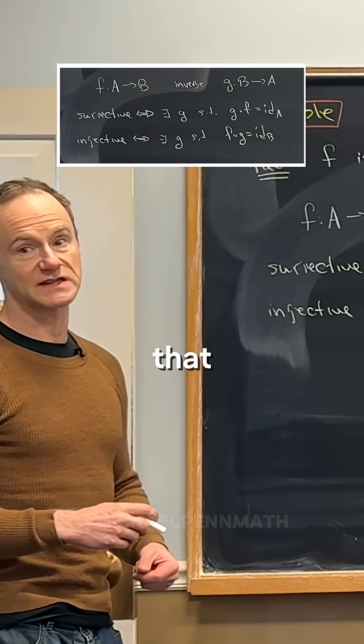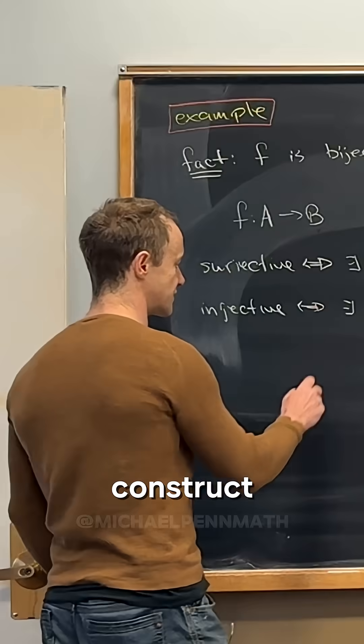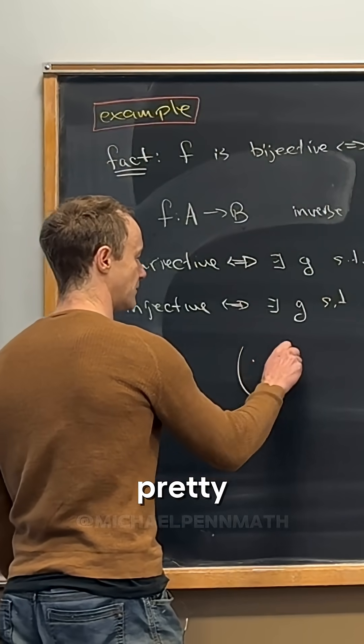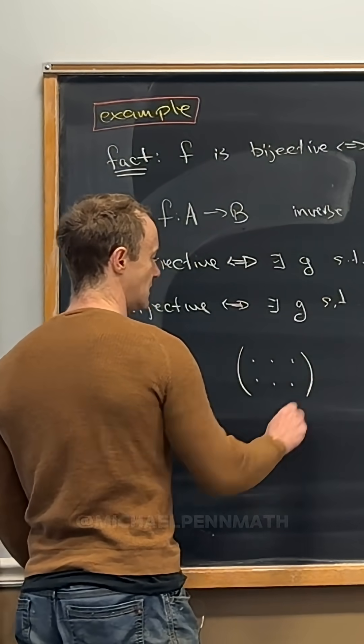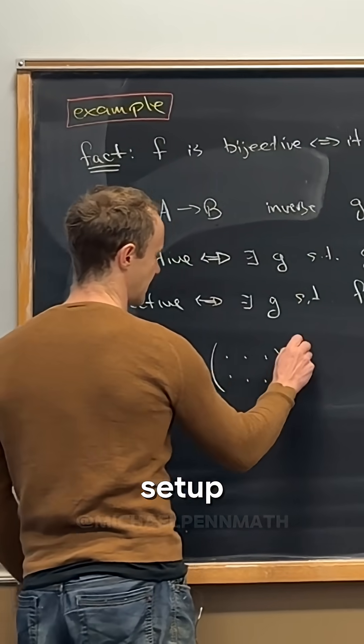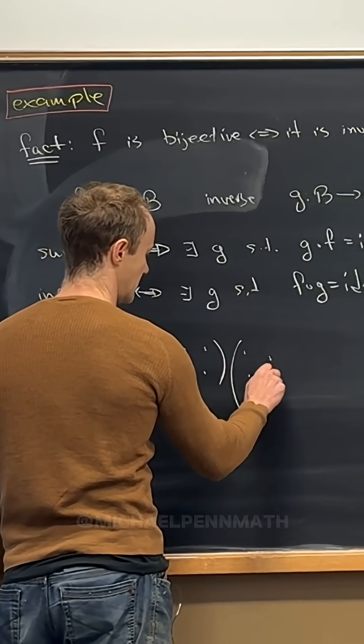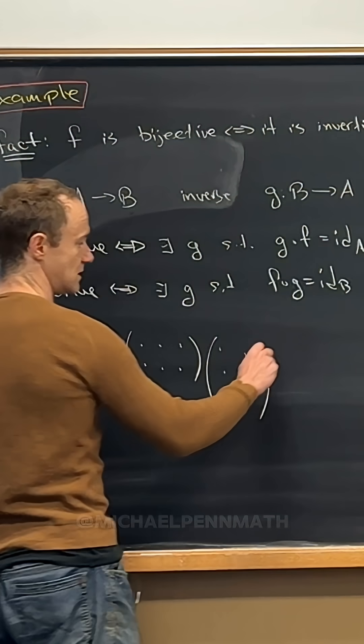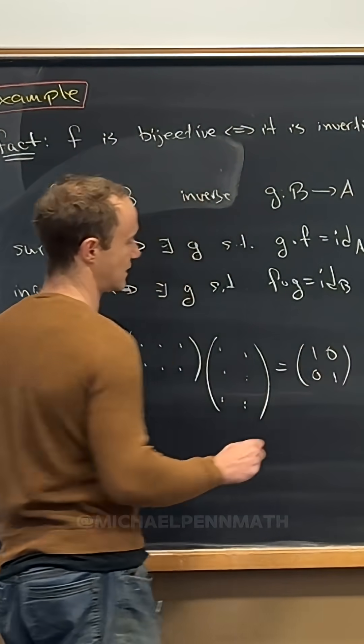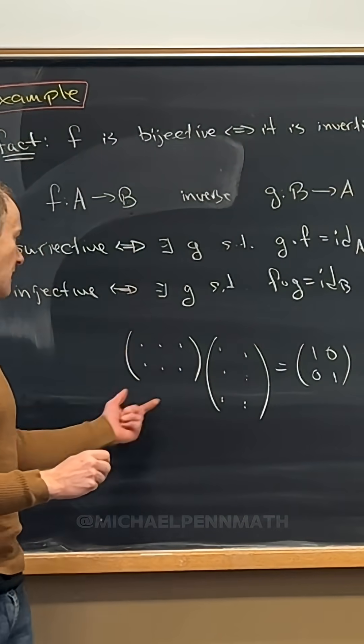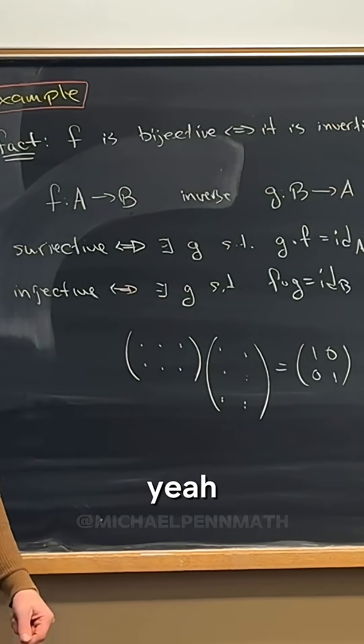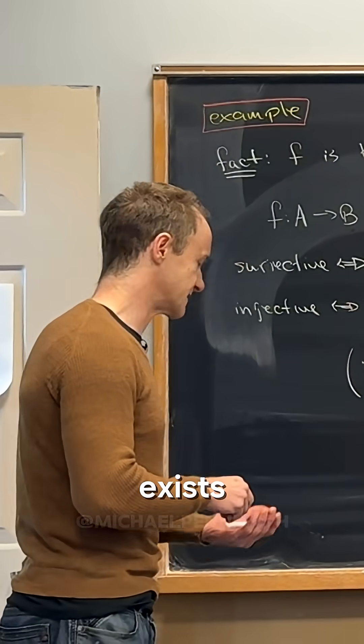I mean, you can even see that with matrices, like you could construct pretty easily some sort of setup like this to get that. Because it's not square. And so that kind of thing exists.